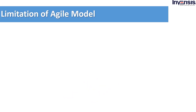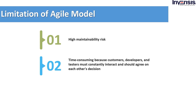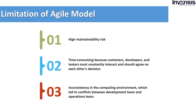Let us now see the limitations of Agile. High maintainability risk. It is time-consuming because customers, developers, and testers must constantly interact and agree on each other's decisions. There is inconsistency in the computing environment, which led to conflicts between the development team and operations team. For example, code developed by a developer works fine at his end but there is an issue in production because of inconsistency in the computing environment and differences in configuration. There was also a lack of coordination between developers and operations engineers, which slowed down the development phase and updates.